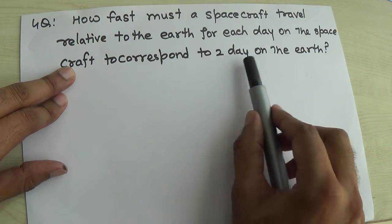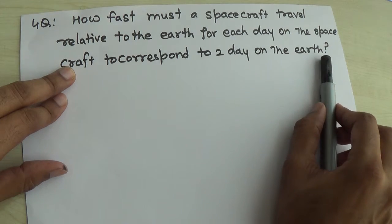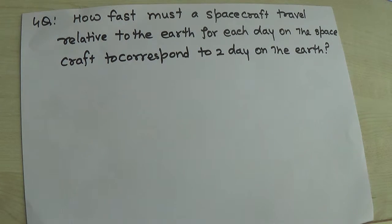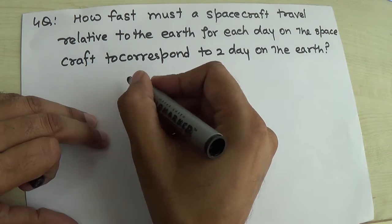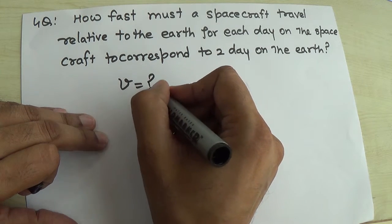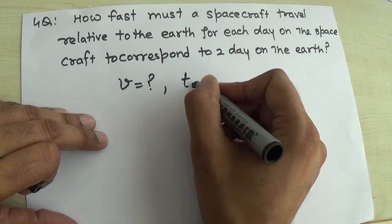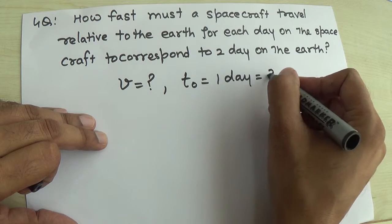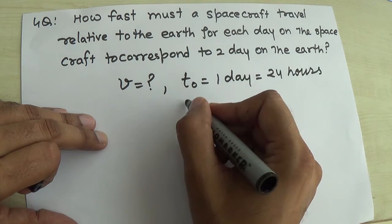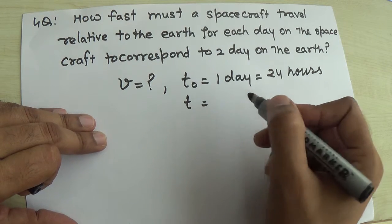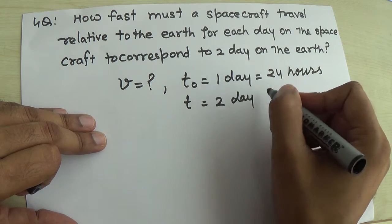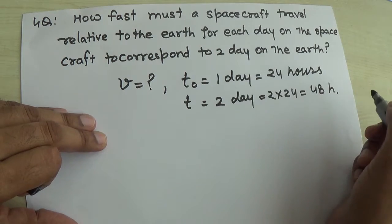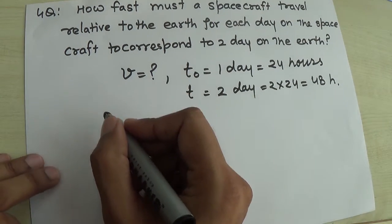The Earth is a rest frame and the time there is two days. So from this problem, the given values are: T-naught equals one day, which is 24 hours, and T is the time on Earth, which is two days — that means 2 times 24, equal to 48 hours.